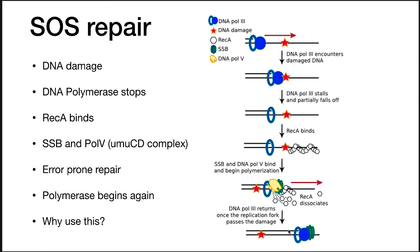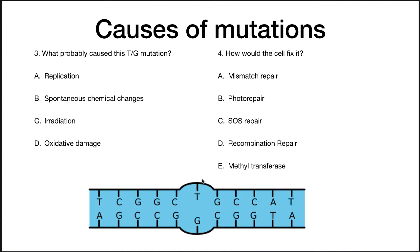Now we have a number of clicker questions to test whether you understand what we've talked about so far. If you look at this mutation shown on the bottom, what probably caused this T to G mutation? The correct answer is this was probably caused by replication, where an incorrect base was inserted across from the G. So how would the cell fix this? The correct answer is mismatch repair — this is a mismatch base pairing, and that would be the easiest way to fix it.